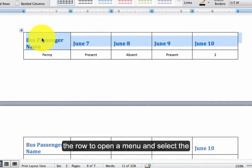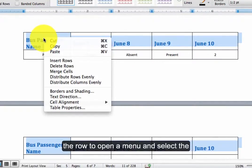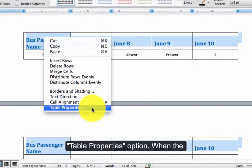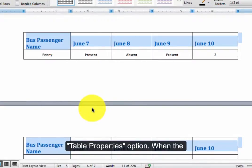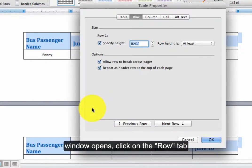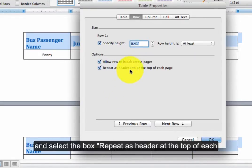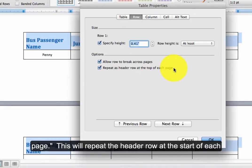Right-click the row to open a menu and select the Table Properties option. When the window opens, click on the Row tab and select the box Repeat as Header Row at the top of each page.